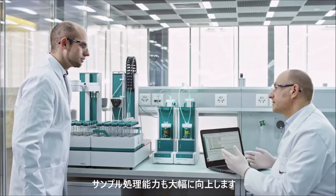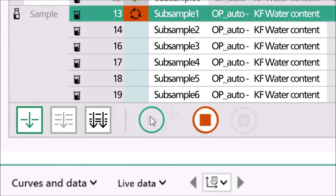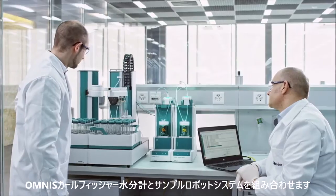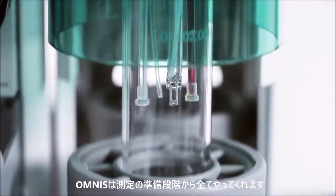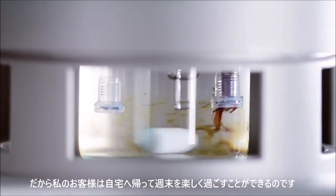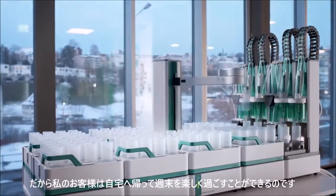Sample throughput can of course also be increased. Automated Karl Fischer titration with the Omnis sample robot. Omnis processes the prepared samples completely unattended, while my customers are already at home or enjoying their weekend.